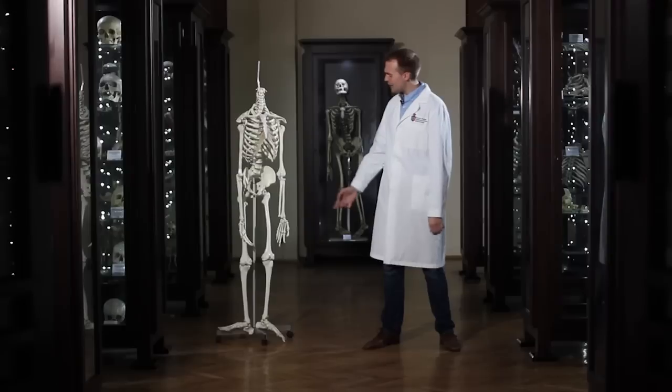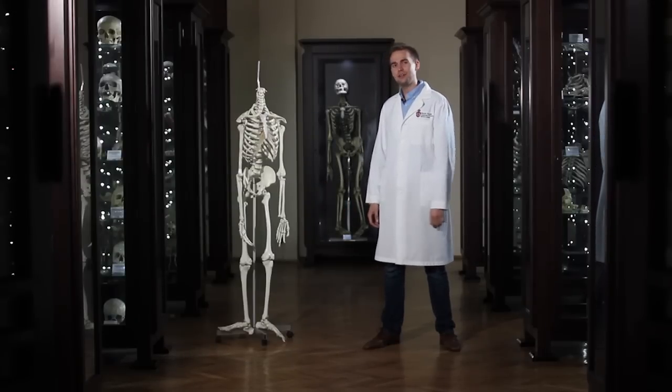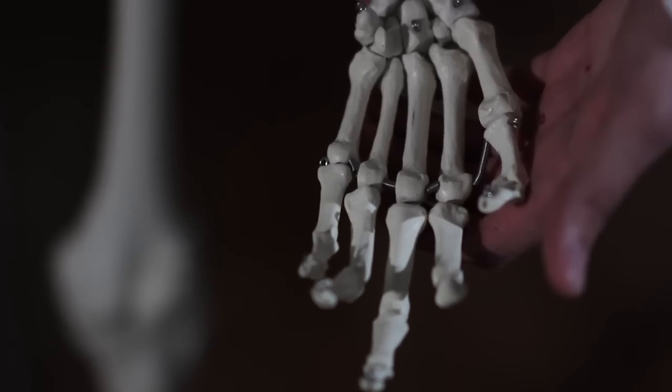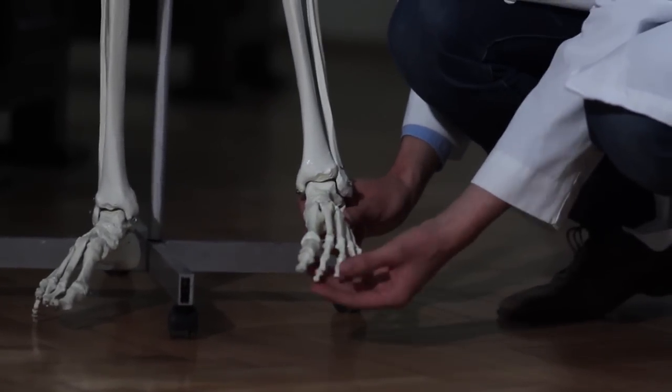Do you know whether the human hand or the foot has more bones? Well, if you said the human hand, you're right. The human hand, including the wrist, has 54 bones, whereas the foot only has 26.